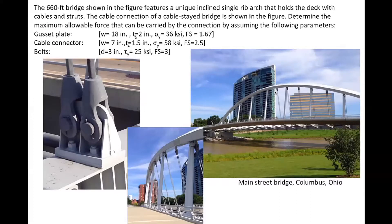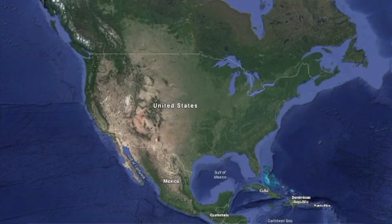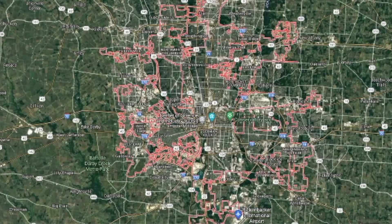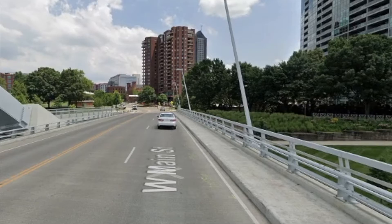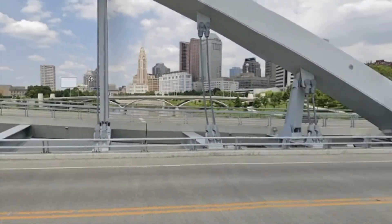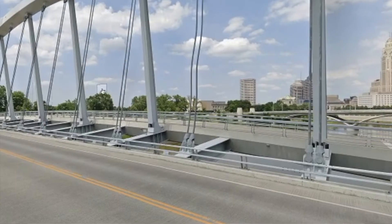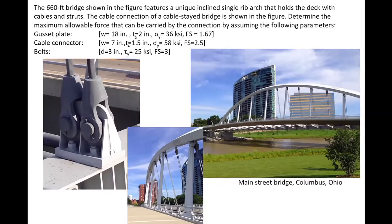In this bridge, which is 660 feet long, there are several cables holding the deck. We want to focus on the connection of the deck and the cables. In this connection there is a gusset plate used for connecting the cables to the bottom beams in the deck. We also identify two large bolts and some cable connectors that are used for connecting the cable to the gusset plate through the bolts.